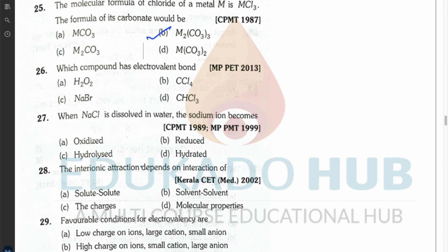Question twenty-six: which compound has an electrovalent bond? Among H₂O₂, CCl₄, NaBr, and CCl₃, the answer is NaBr — it is the ionic compound.